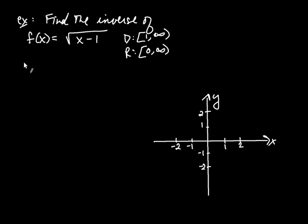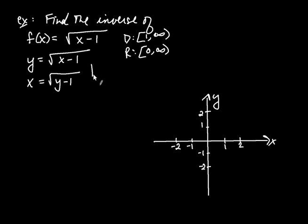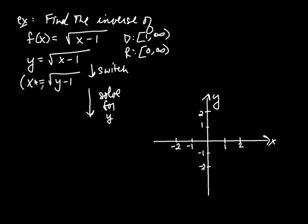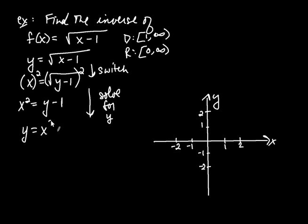Let's find the inverse. Setting f(x) equal to y: y = √(x − 1). Then switch x and y: x = √(y − 1). That's the switch step. Now solve for y — to get rid of the radical, square both sides: x² = y − 1. Adding 1 to both sides: y = x² + 1. Using inverse notation, f⁻¹(x) = x² + 1.